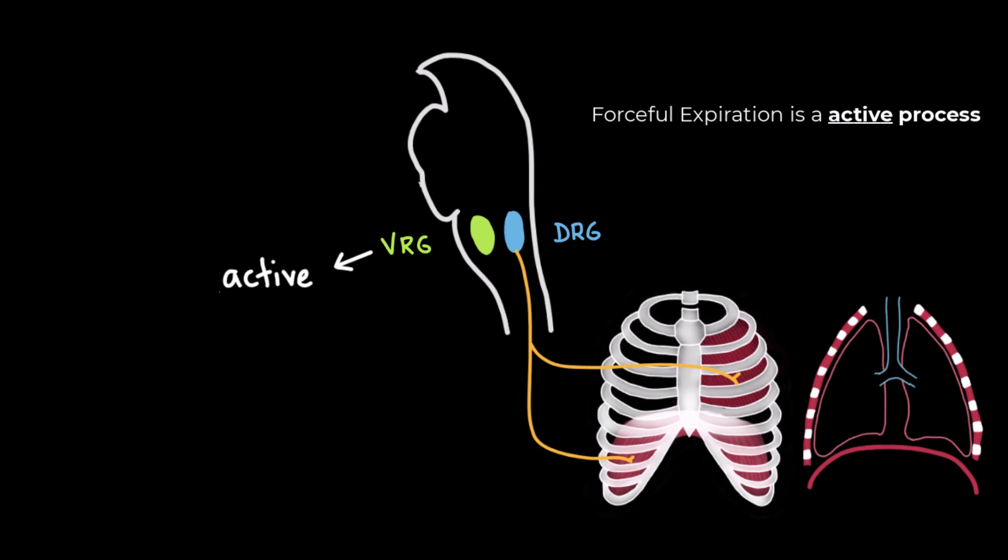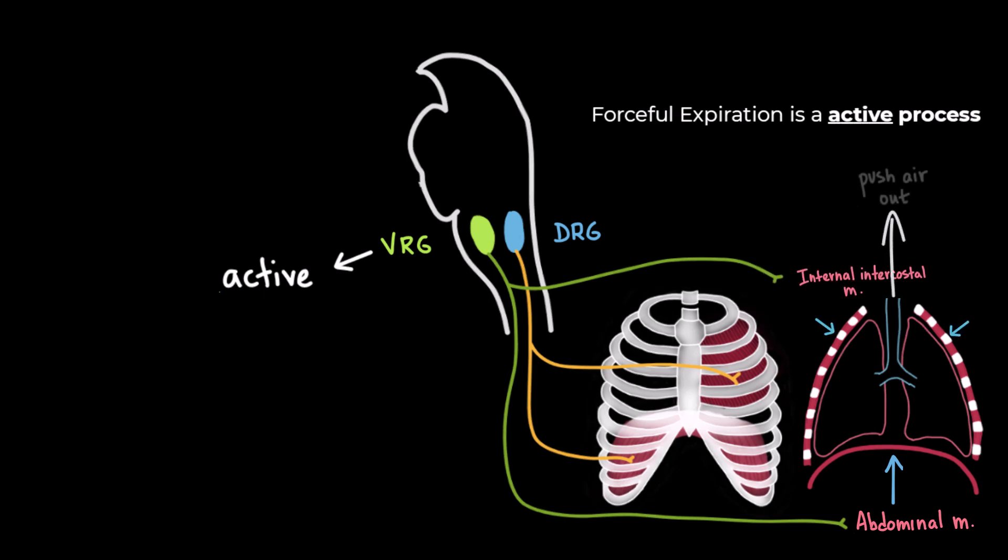It sends signals to activate the expiratory muscles, mainly the abdominal muscles, which contract and push the diaphragm upward, and to the internal intercostal muscles which pull the ribs downward. Both of these muscles help to push air out of the lungs.